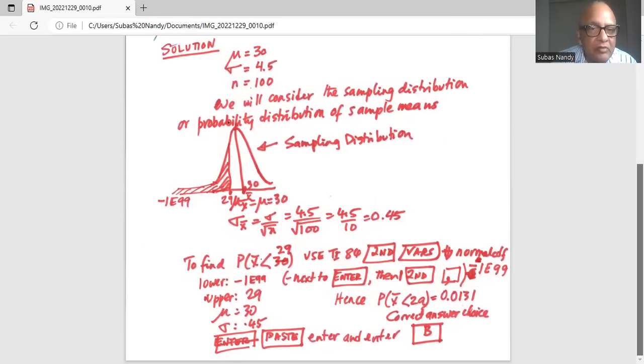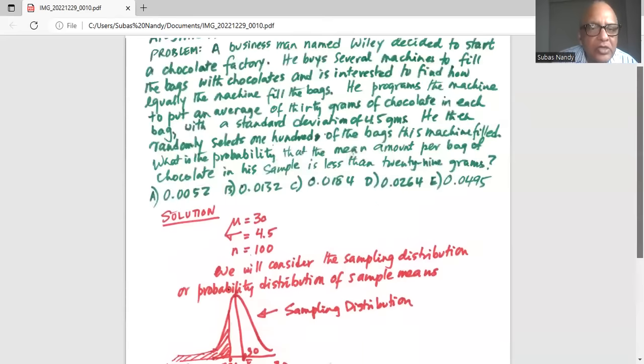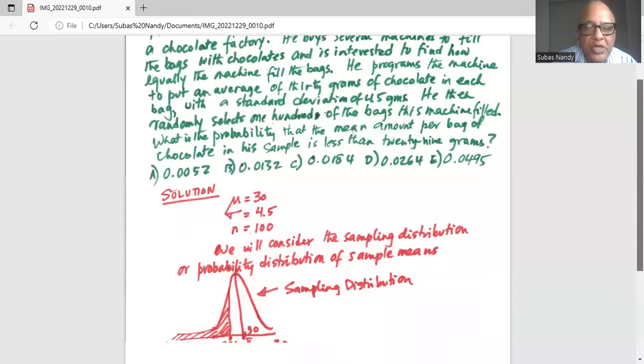Okay. So here we are talking about the sampling distribution. And then we will put our cursor on PEST and hit enter and enter and we get probability of x bar less than 29 is 0.0131 which is answer choice B. Hence the correct answer is B.